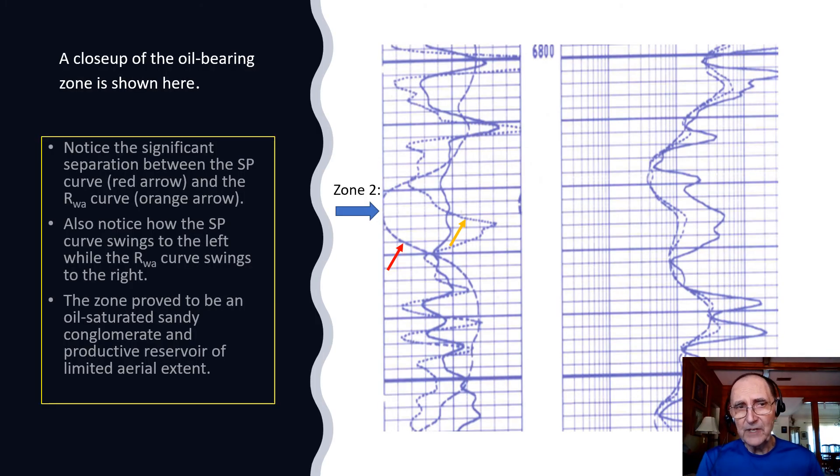And here is a close-up of the oil-bearing zone. Notice a significant separation between the SP curve, indicated by the red arrow, and the RWA curve, indicated by the orange arrow. Also notice how the SP curve swings to the left, while the RWA curve swings to the right. The zone, by the way, proved to be an oil-saturated, sandy conglomerate, and a productive reservoir of limited aerial extent.